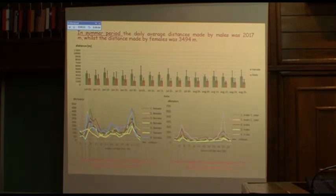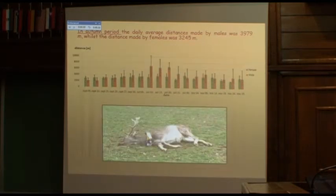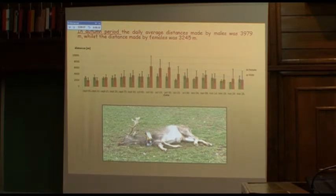The distance made by fallow deer shows two relevant peaks: one around sunrise and one around sunset, resulting in two-peak graphs. The locomotion of fallow deer in the summer period is stronger around sunrise and sunset for both females and males. On the graph, one can notice a locomotion peak in males during the rutting period in mid-October. The locomotion of females is uniform.